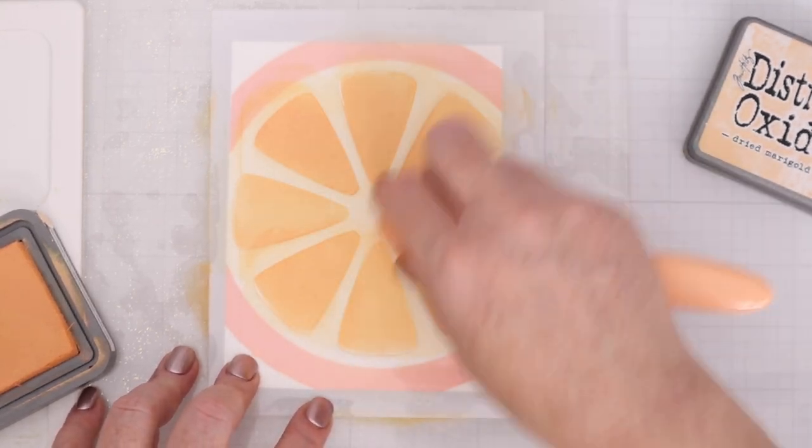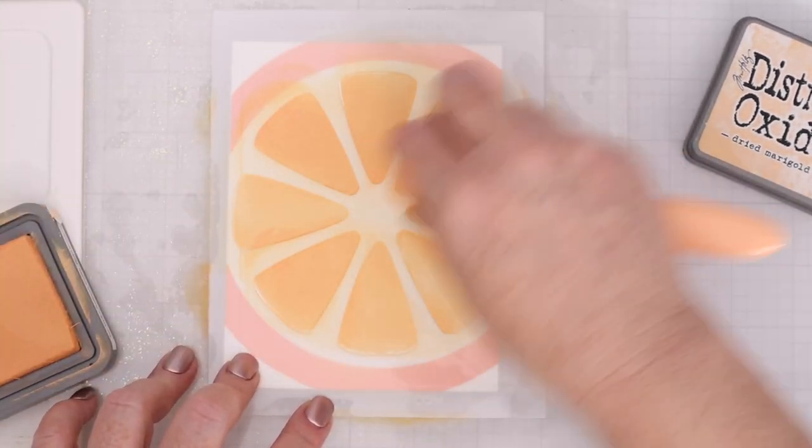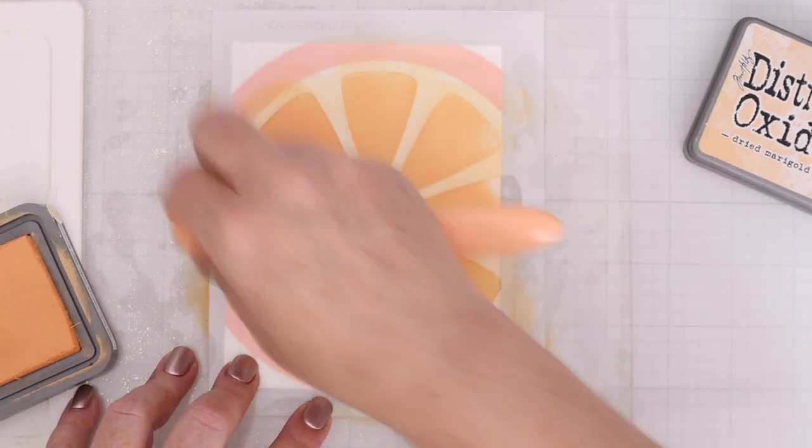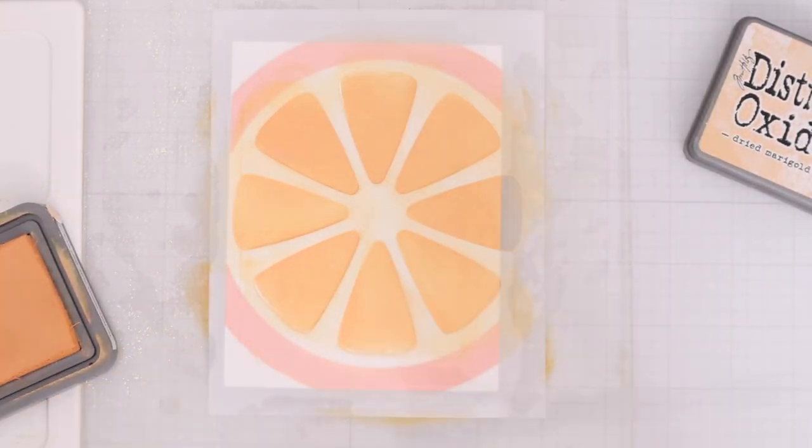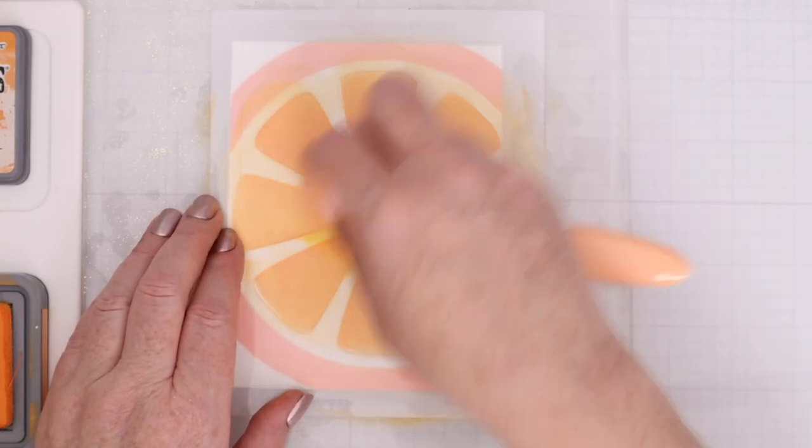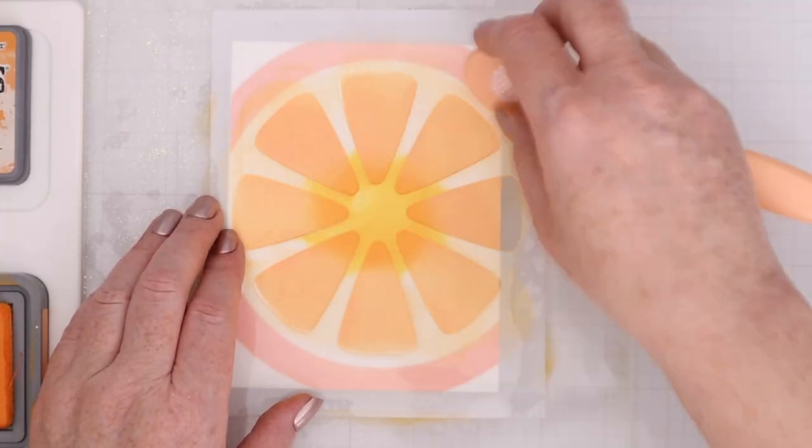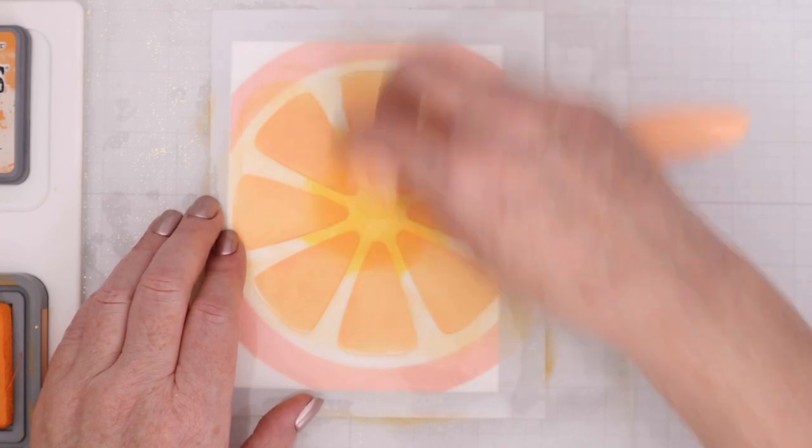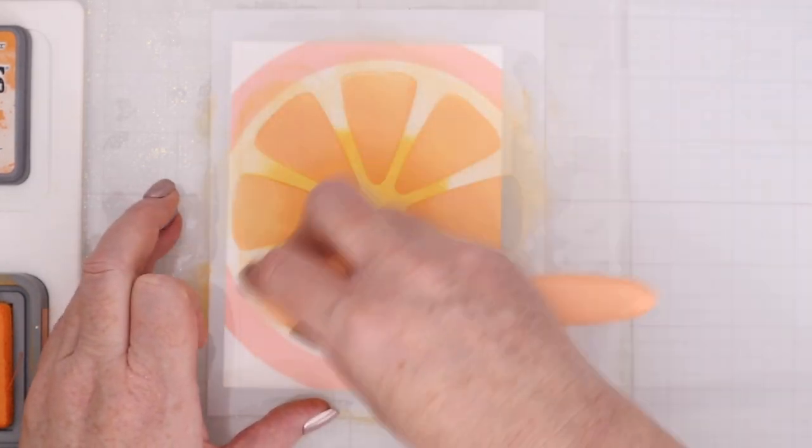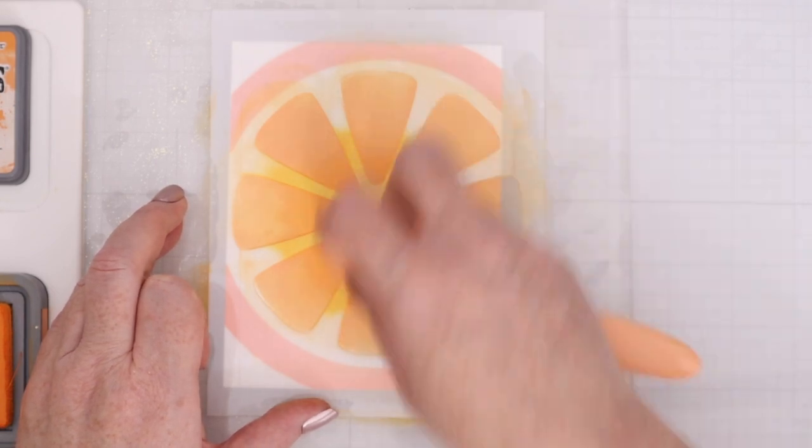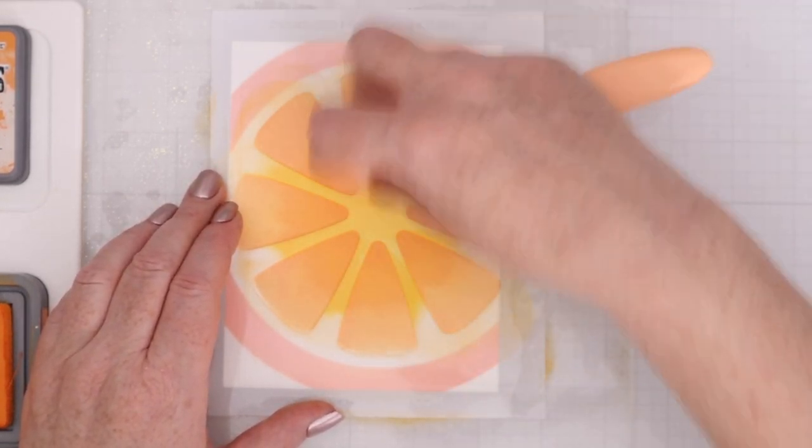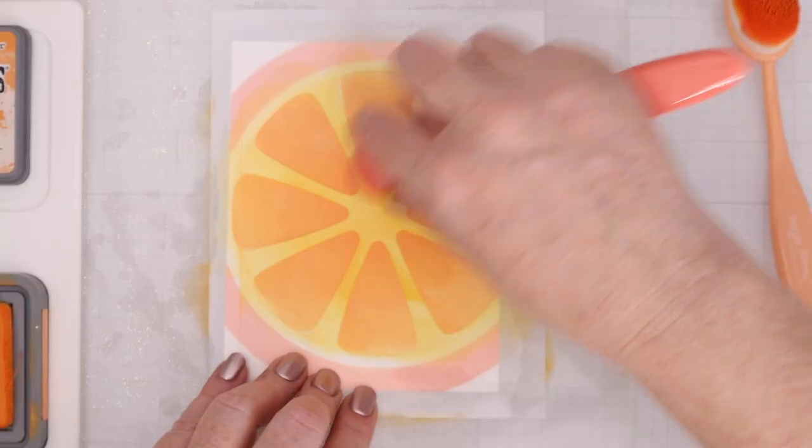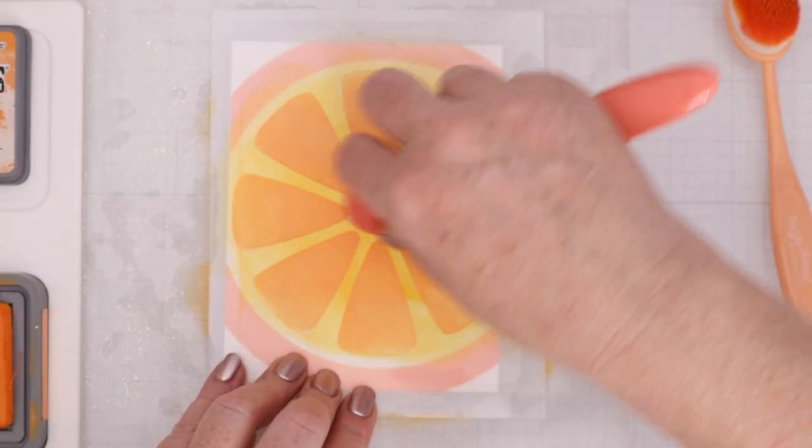For the center of the orange I'm starting with dried marigold. So even though it is one open space or several open spaces don't be afraid to blend out a couple of different colors. Here I'm using Carved Pumpkin to add a slightly darker orange on top starting at the center and going in a circular motion and then brushing from the center towards the outside to create that look of the fibers of the orange or the pith.